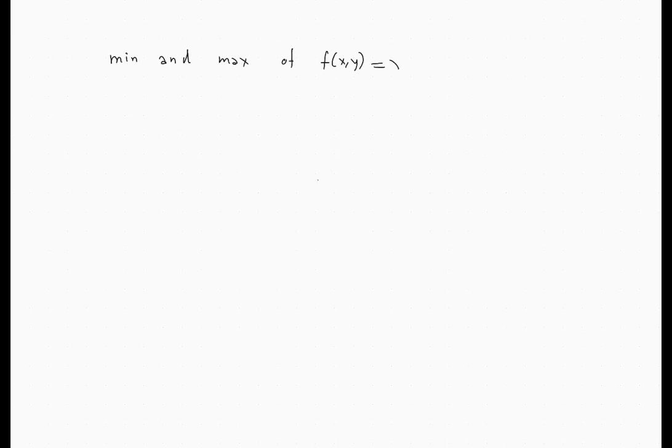Here we want to find the minimum and maximum of the function f(x,y) = xy on the ellipse x² + 3y² = 6.